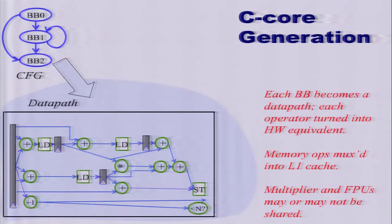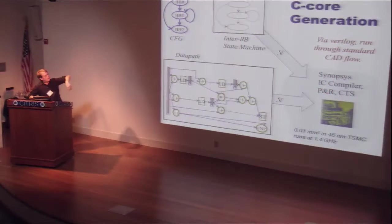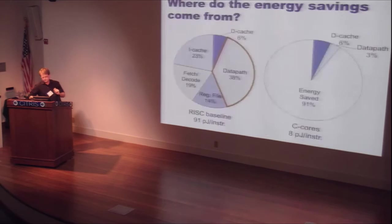The toolchain takes the code, performs standard compiler transformations, builds a control flow graph, builds a data flow graph off each basic block, and then has a state machine in hardware reflecting the control flow graph. We emit Verilog and run it through a standard Synopsys IC compiler flow.